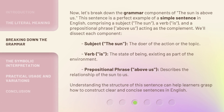Now let's break down the grammar components of the sun is above us. This sentence is a perfect example of a simple sentence in English, comprising a subject — the sun — a verb — is — and a prepositional phrase — above us — acting as the complement. We'll dissect each component: subject, the sun, the doer of the action or the topic; verb, is, the state of being, existing as part of the environment; prepositional phrase, above us, describes the relationship of the sun to us. Understanding this structure can help learners grasp how to construct clear and concise sentences in English.